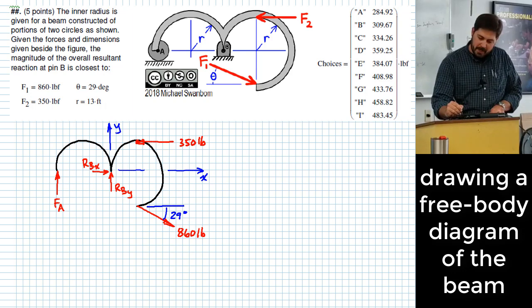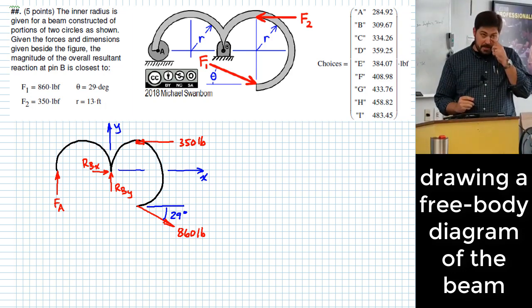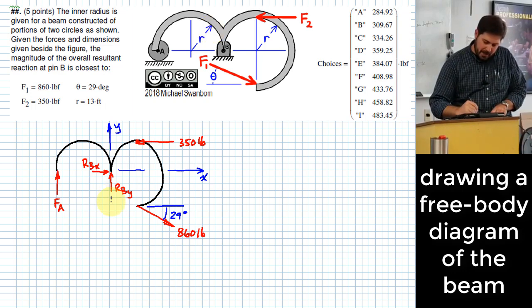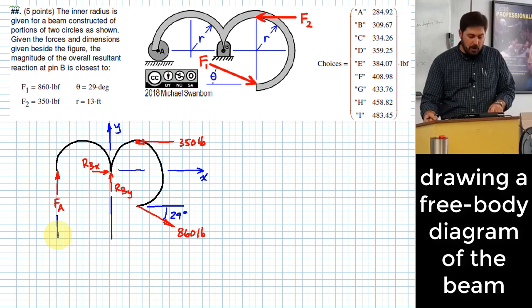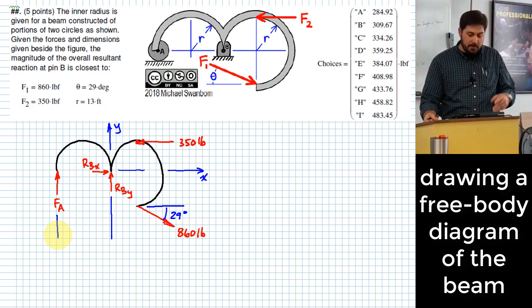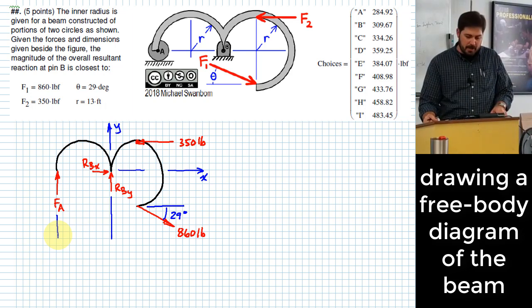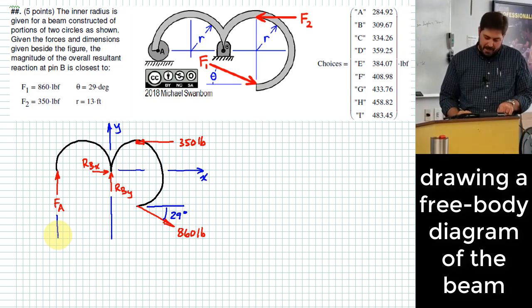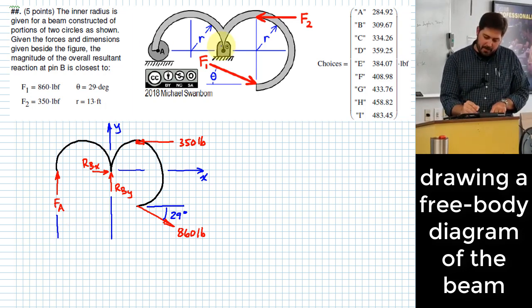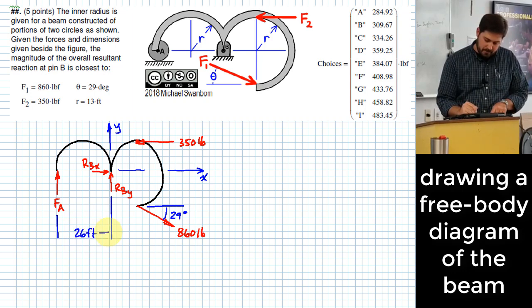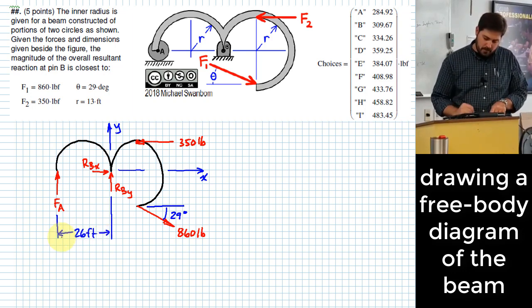I know these radii. Let me, instead of expressing the radius values themselves, let me show what is probably going to really matter more on this problem. I'm going to want to know how far is it from the line of action of FA to the point around which I'm probably going to sum moments, which might be point B. How far is that? It's the diameter, which is twice the radius, so this would be 26 feet.